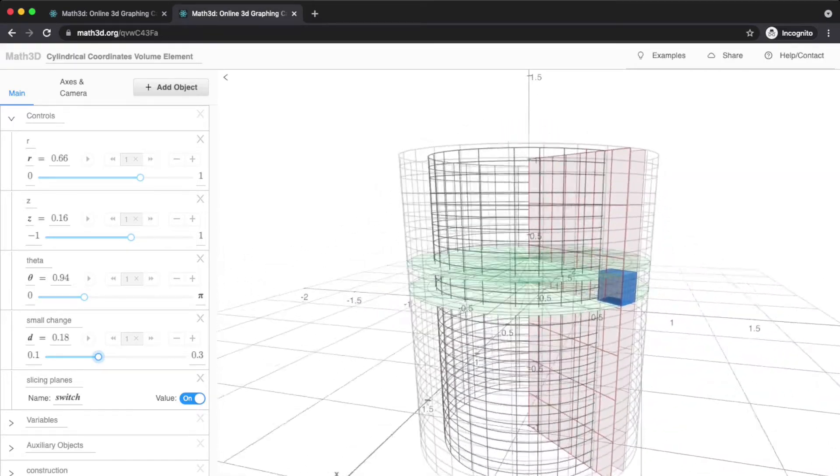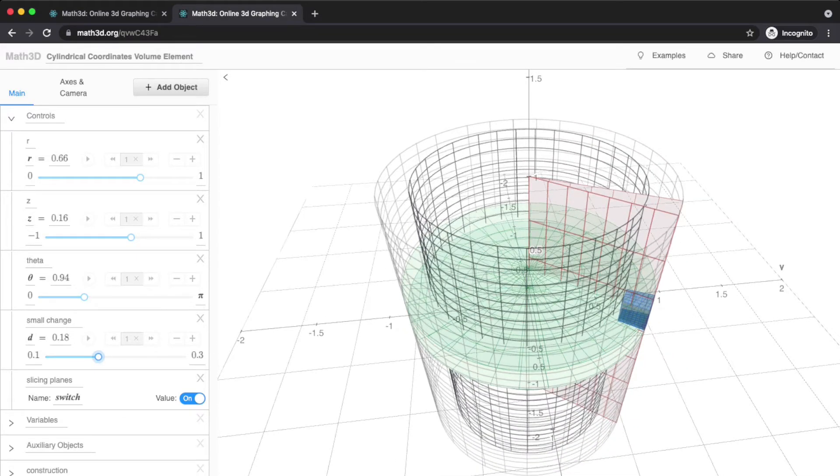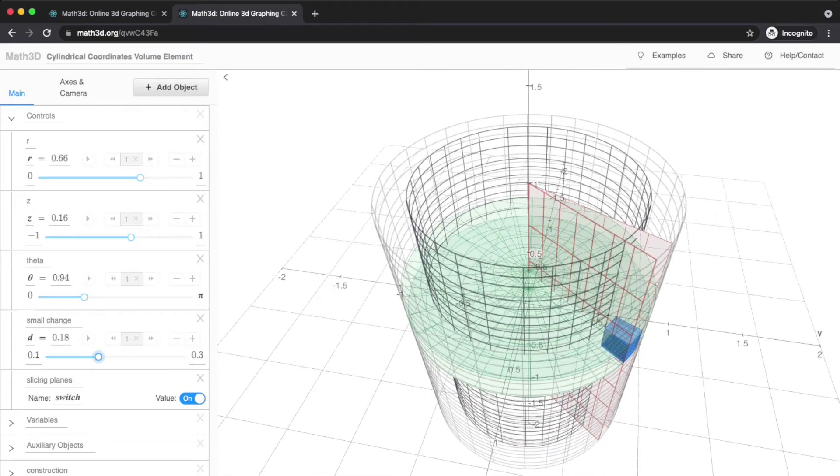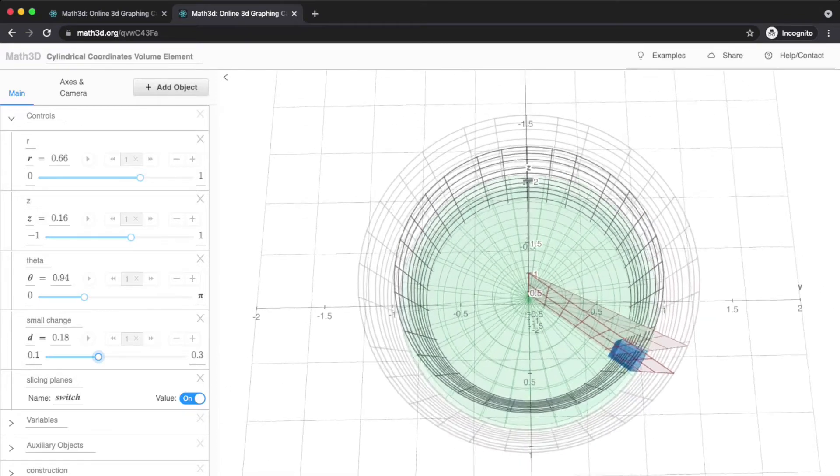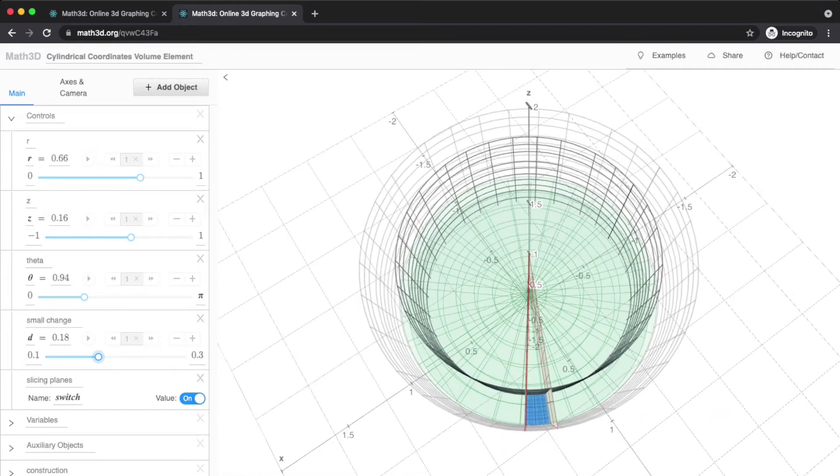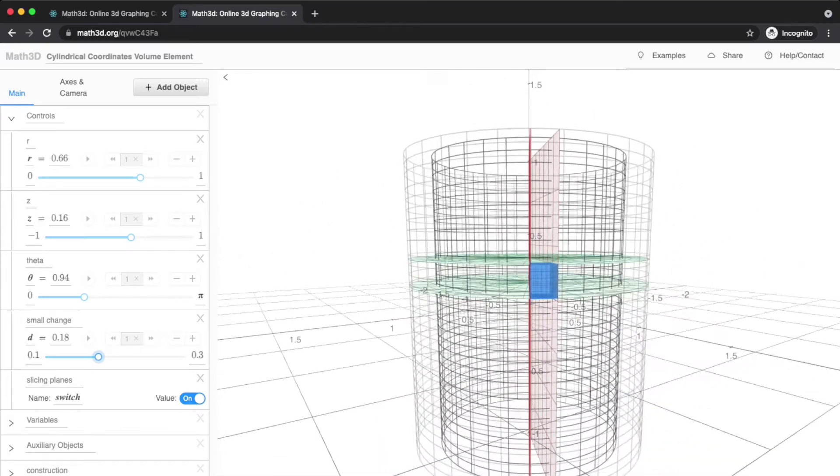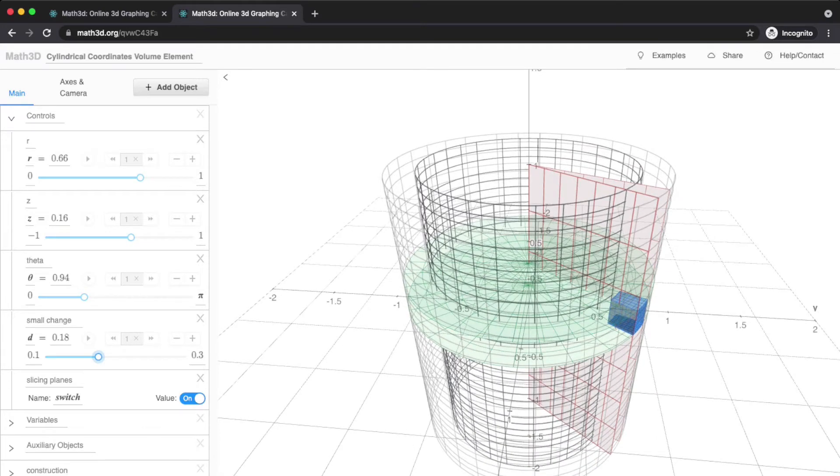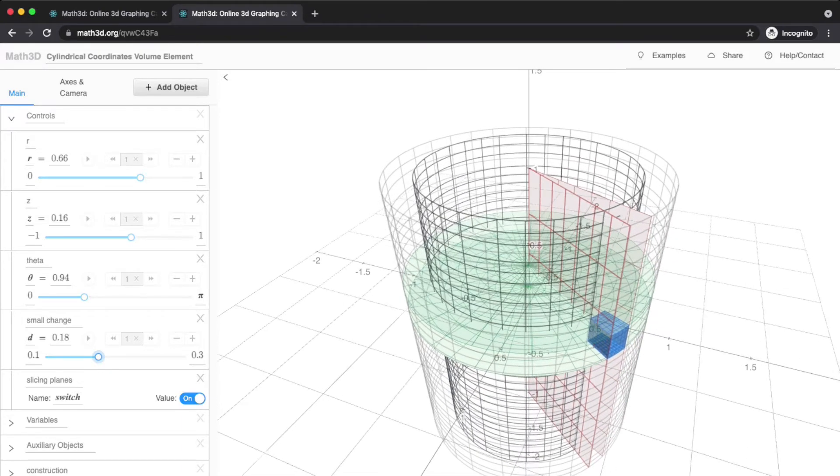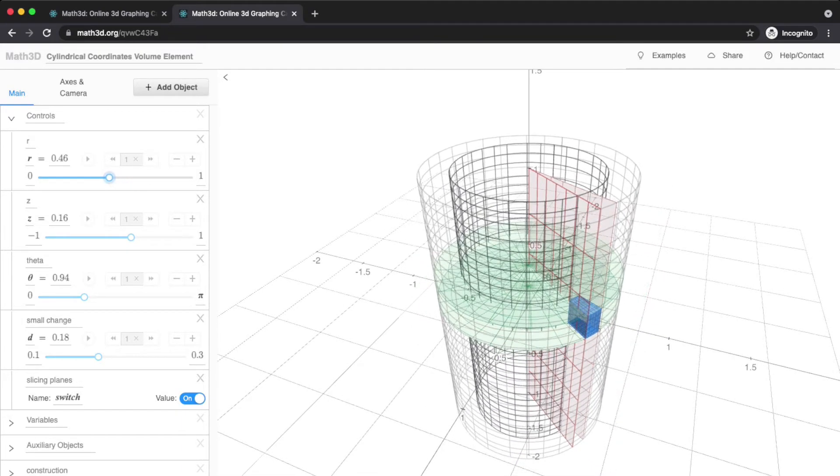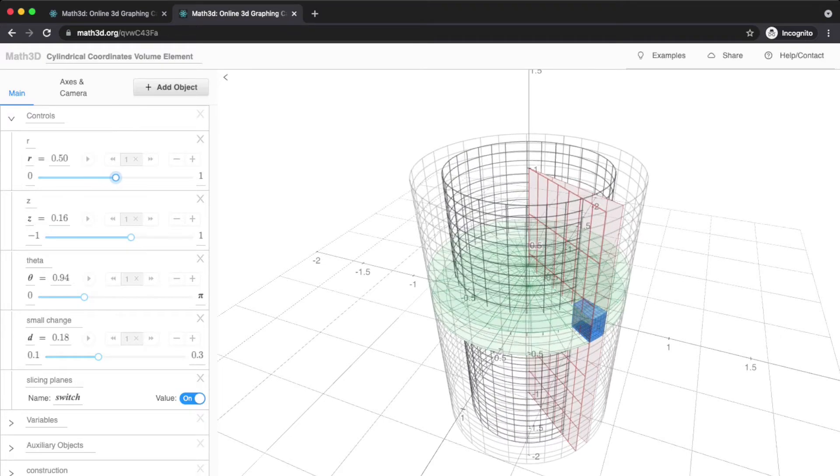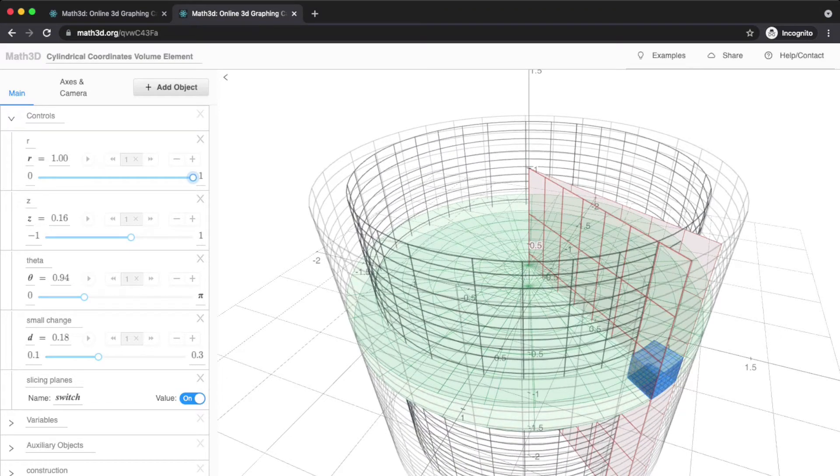This blue region is trapped between two constant theta values. You can see those two red planes there. It's trapped between two constant R values, the concentric cylinders from that top-down view. So two R values and two Z values, those green planes. We're interested in the volume of the cylindrical box.